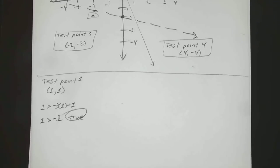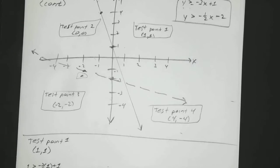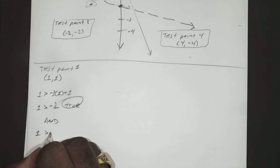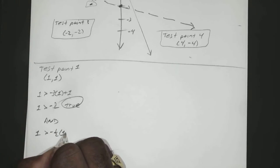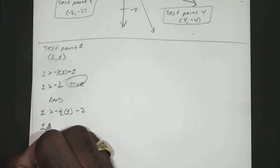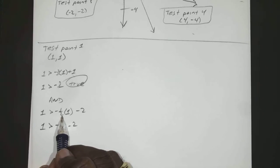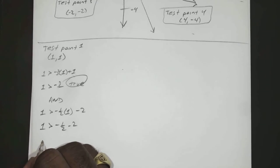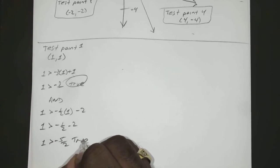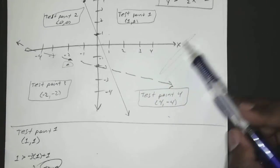Remember, to be a solution, it has to be true for both. So you have 1 and 1 here. So you have 1 is greater than negative 1 half times 1 minus 2. So 1 is greater than negative 1 half minus 2. Negative 1 half minus 2 is negative 5 over 2. So 1 is greater than negative 5 over 2, which is true. Okay? So as long as it's true for both, the section with that point, you're going to shade that in.